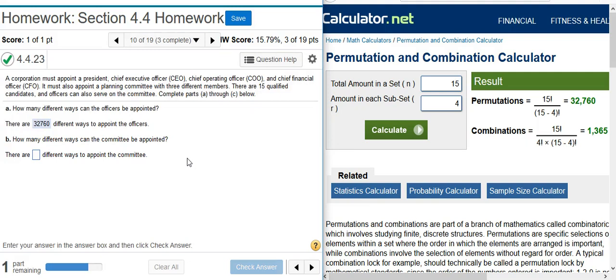Now, Part B asks, how many different ways can the committee be appointed? The committee has 15 candidates that we're choosing from, and we have three different members for the committee. So we want three from 15 total.